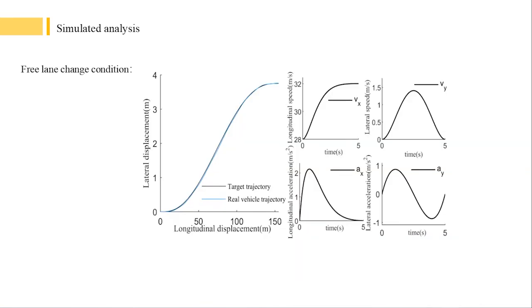When lane change is free, the optimal lane change duration is 5 seconds. The lateral displacement is 3.75 meters, and the longitudinal displacement is 154.77 meters. And the lane change trajectory is continuous and smooth.